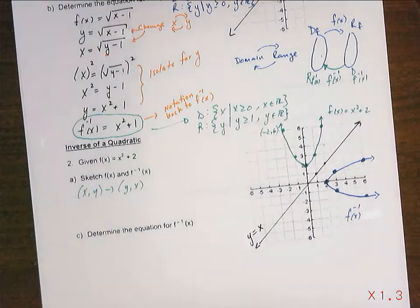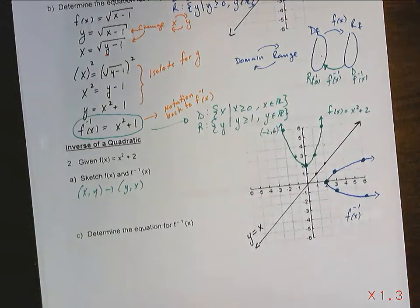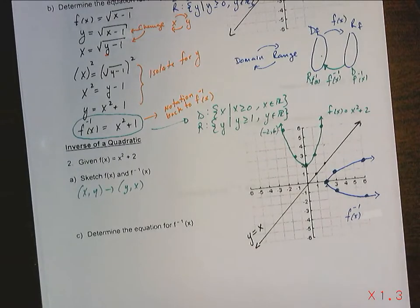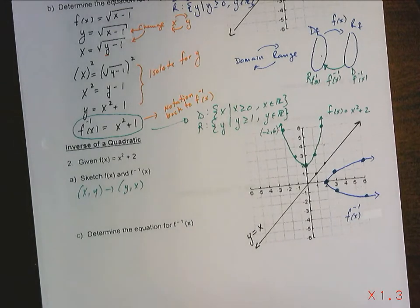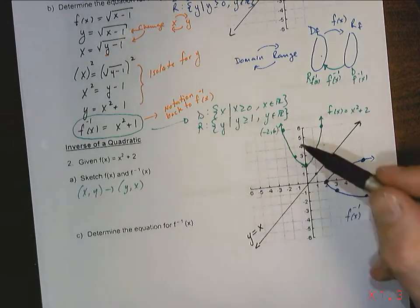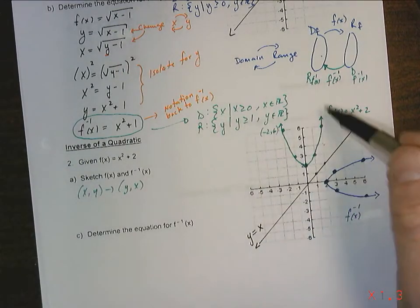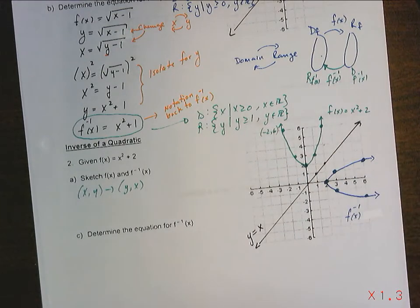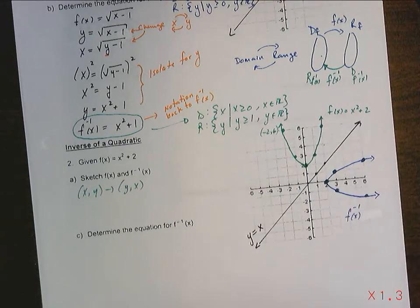Something interesting: the inverse function is actually not a function — it fails the vertical line test. So when we reflected x² + 2, it gave us the inverse, but it's not a function. So we'll just call it the inverse at this point.